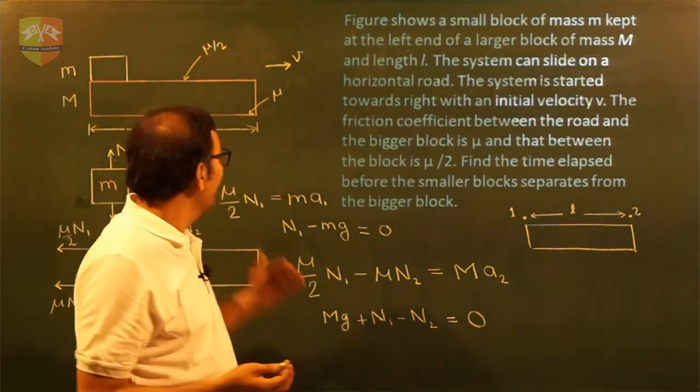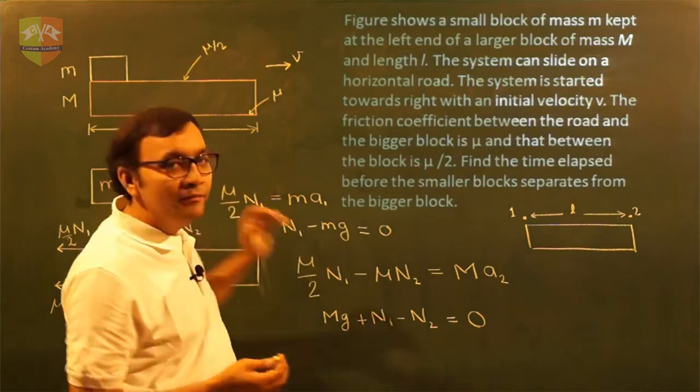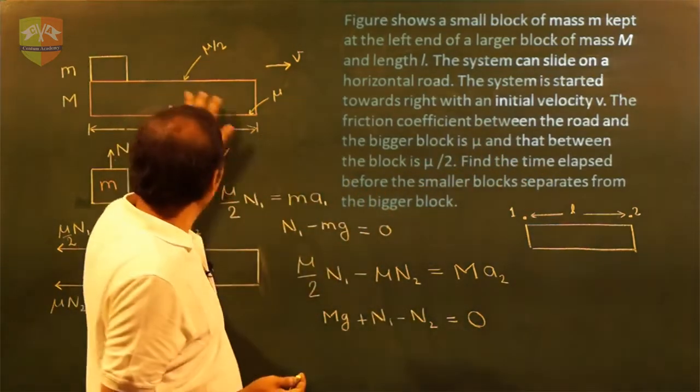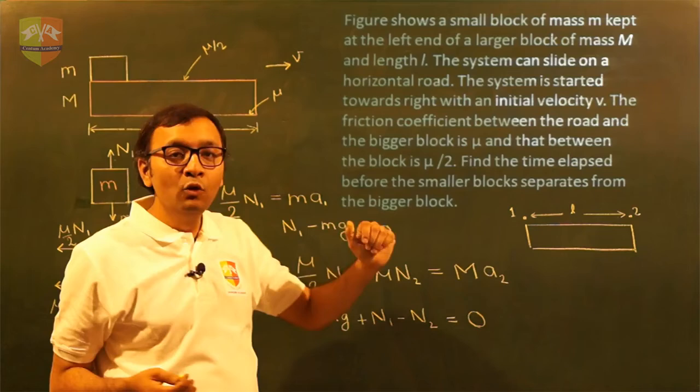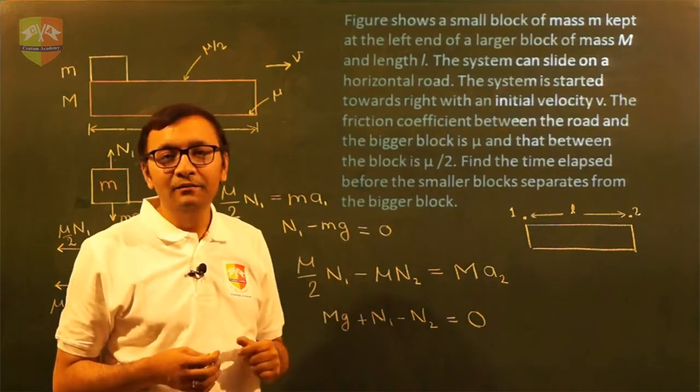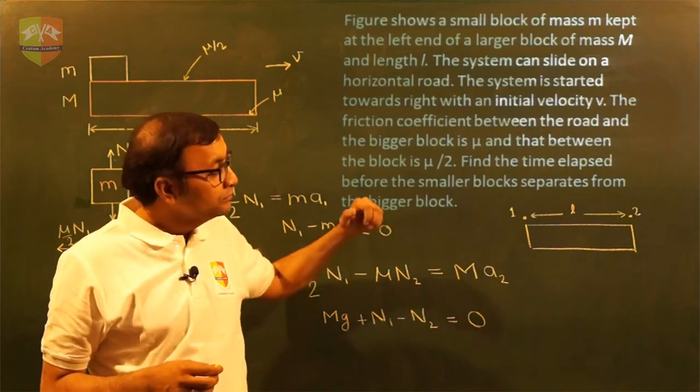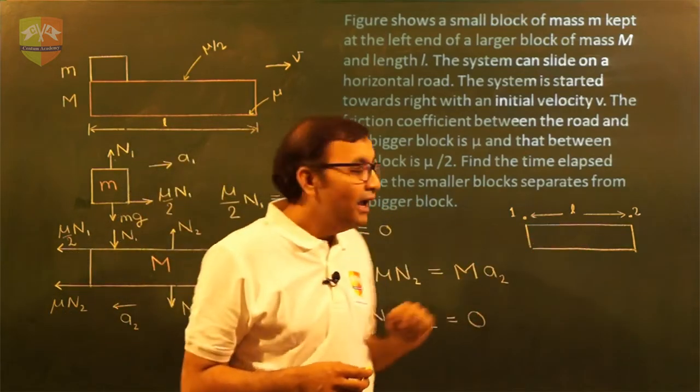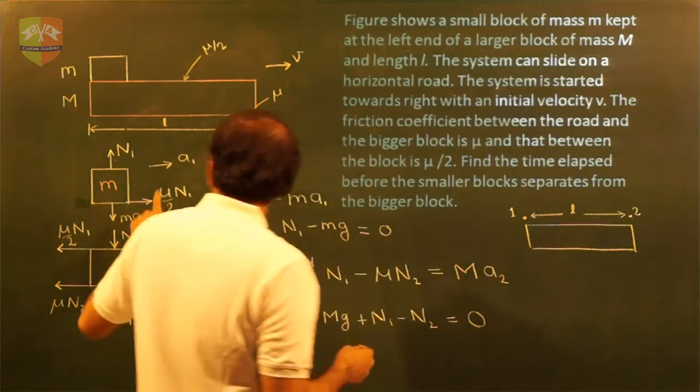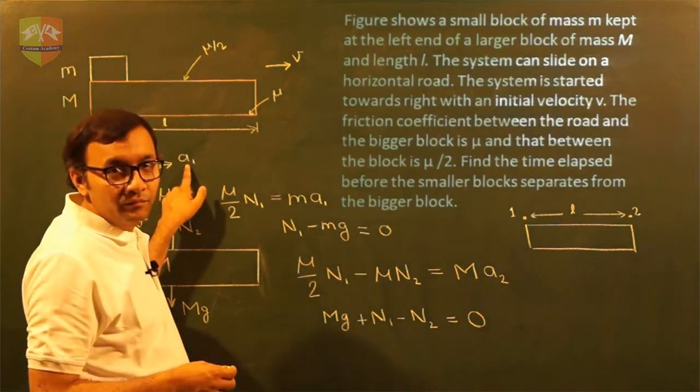What will happen? The small m and capital M will move together. With respect to capital M, small m moves a distance of L. And what is the acceleration along the length? Along the length it has acceleration A1.